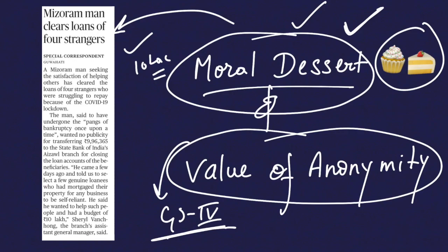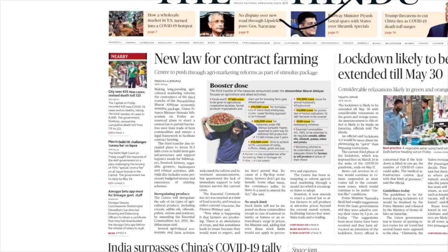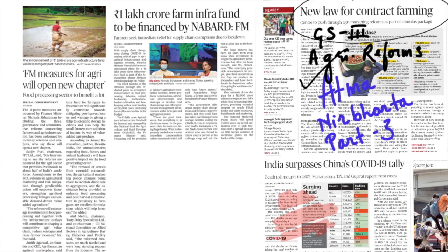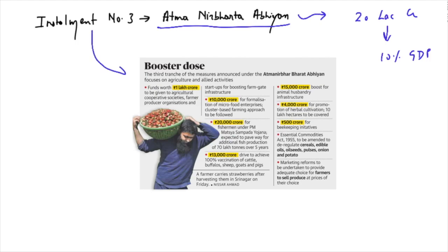Now we'll take up today's analysis. This is page number one of the Hindu newspaper. The first news item is installment number three of Atmanirbhar Abhiyan, announced by the finance minister yesterday. I will be clubbing certain other articles from the Hindu newspaper and will take certain attachments from the PIB also. Government has decided to give a fiscal booster to the economy worth 20 lakh crore, which is equivalent to 10% of India's GDP. Earlier two installments have been given and this is installment number three.